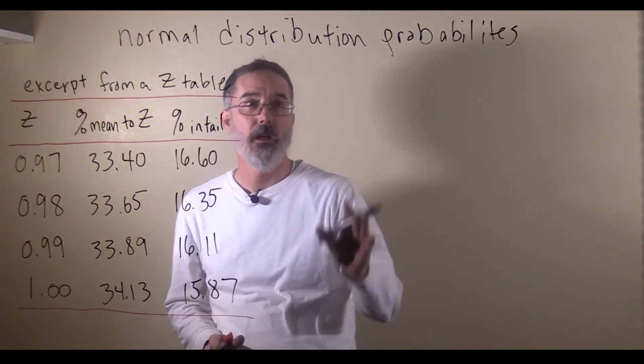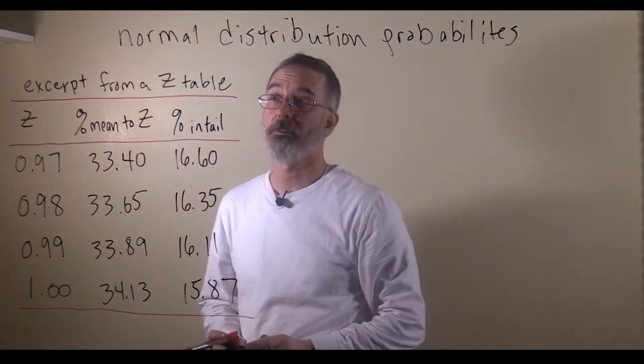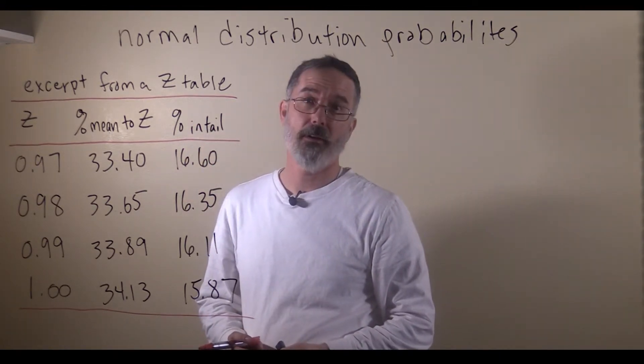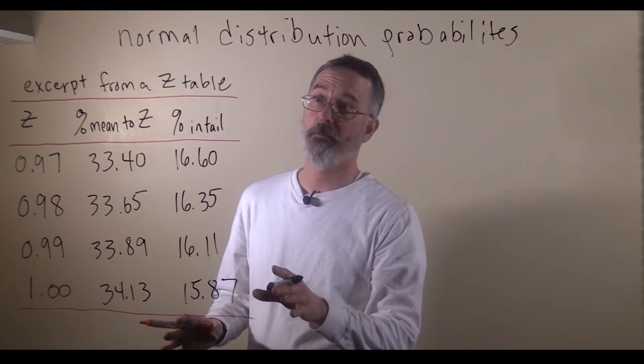Alright, so we have already talked through how to do probability problems with the simplified version of the normal distribution table, but now we are going to look at just a small part of a real z-table.